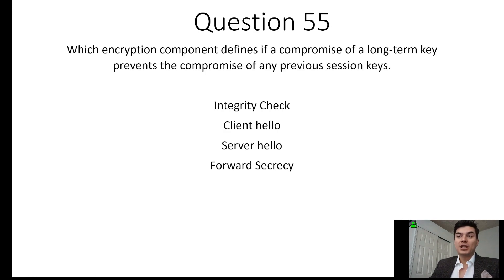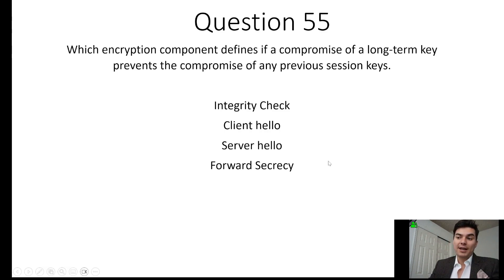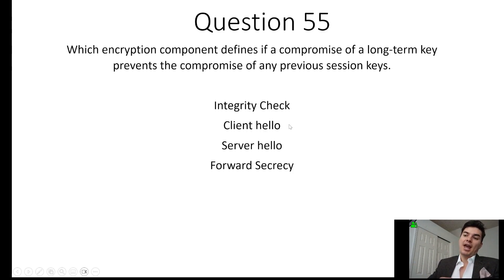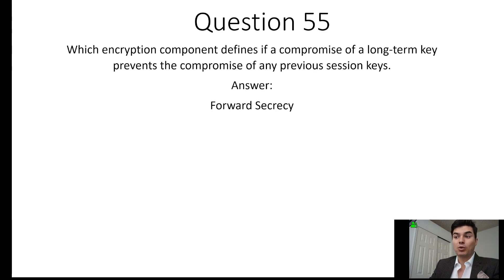Question 55: Which encryption component defines whether a compromise of a long-term key prevents compromise of any previous sessions? That would be forward secrecy or perfect forward secrecy. The integrity check refers to checksums or cryptographic hashes to verify if data has changed. Client hello and server hello are part of TLS connections — when setting up transport layer security, the device sends a client hello and the server sends a server hello, which is different from the TCP three-way handshake. The answer is forward secrecy.